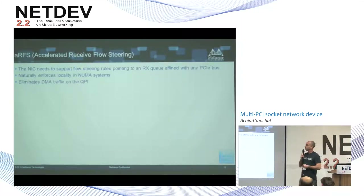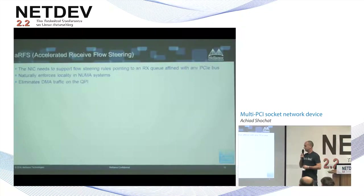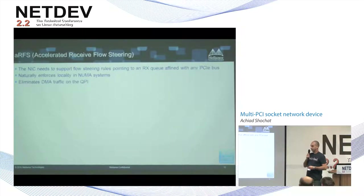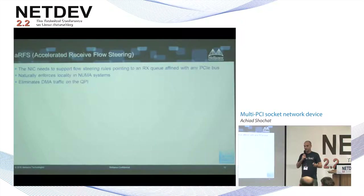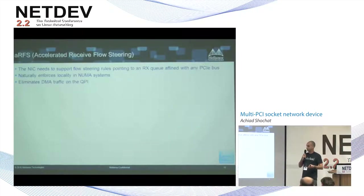What does it take to run ARFS — accelerated receive flow steering — on such NICs? With ARFS, we insert flow steering rules into the device that direct traffic matching a rule to a specific receive queue. Now we have receive queues on multiple PCI buses, so the device will have to support flow steering rules pointing to receive queues affined with different PCI buses.